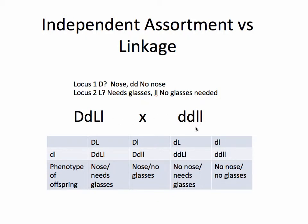We're going to do this cross, and the way we've been taught is to find the gametes. Each gamete gets one gene from each gene pair. So half the gametes are going to carry the big D allele and the other half the little d allele. Similarly for the L locus, we end up with four possible gametes: big D big L, big D little l, little d big L, and little d little l.